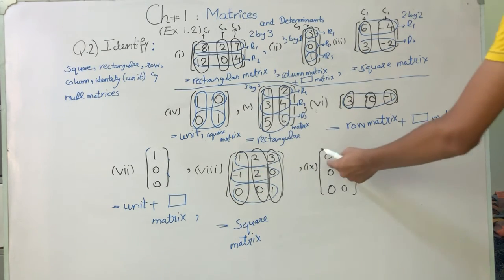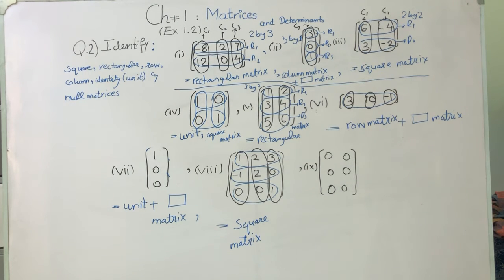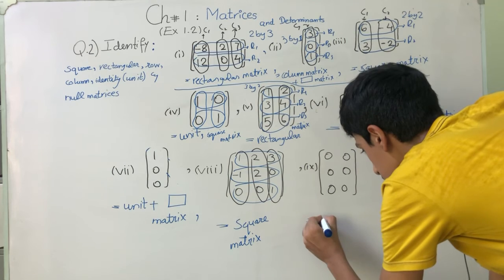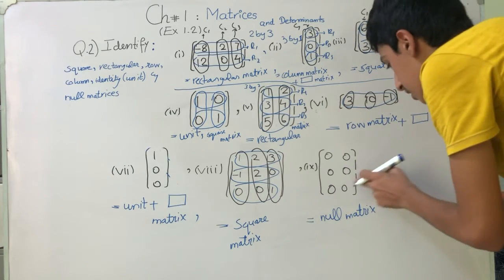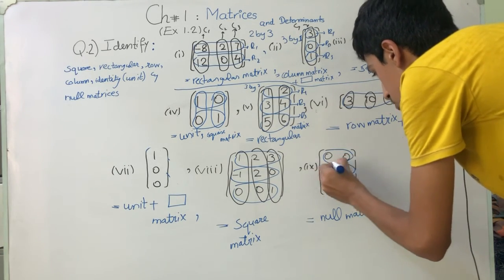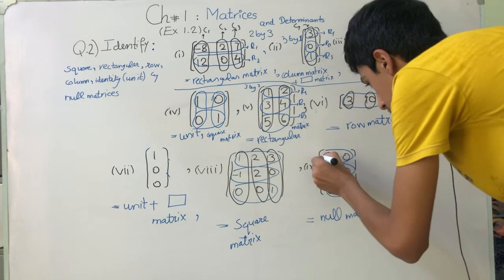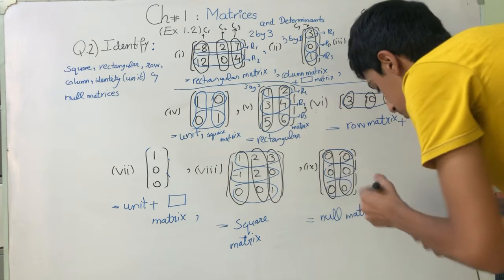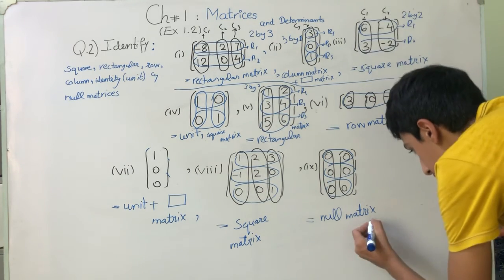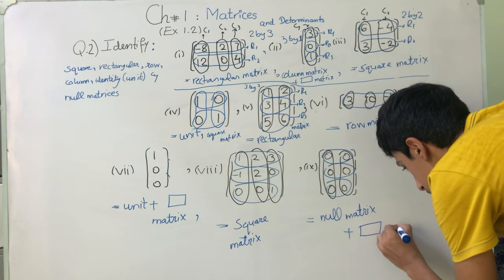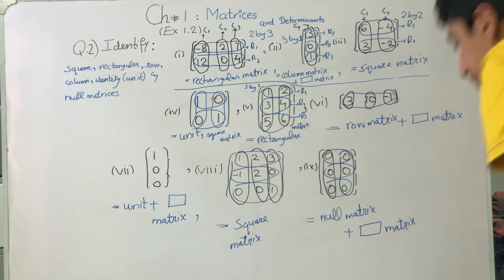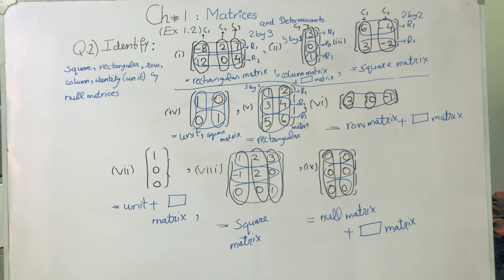Our last part is number 9. The matrix is [0, 0; 0, 0; 0, 0] — all entries are zero, so this is a null matrix. It has 3 rows and 2 columns, so the number of rows is not equal to the number of columns, making it also a rectangular matrix. This completes Exercise 1.2, question number 2.